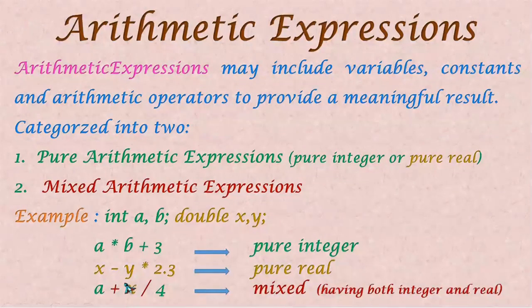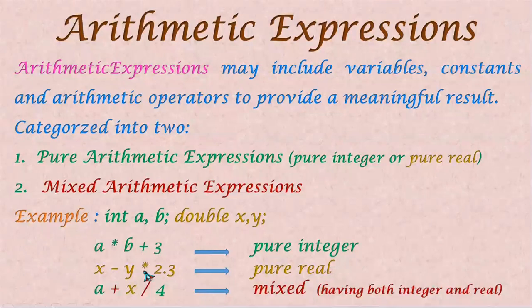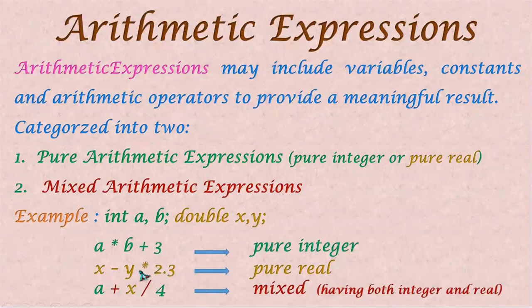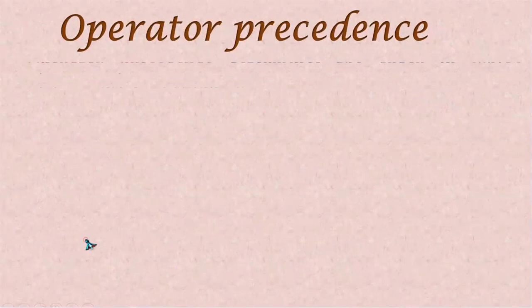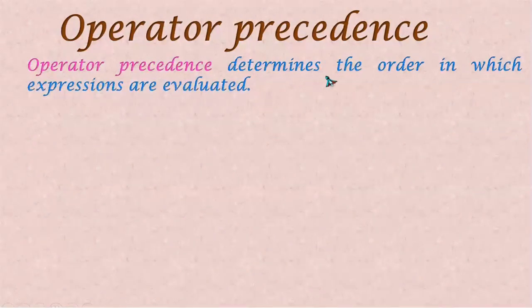Next, we will learn about operator precedence. What does operator precedence mean? It is a rule which decides which will be evaluated first in the expression — whether the multiplication or the subtraction is done first. Operator precedence determines the order in which expressions are evaluated.